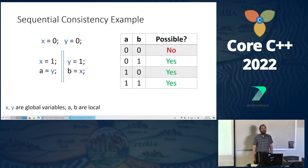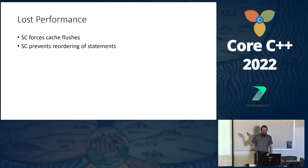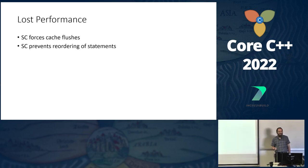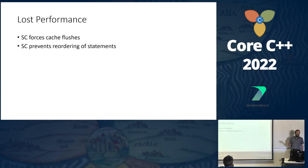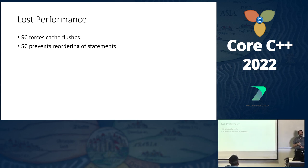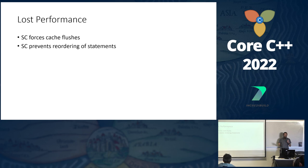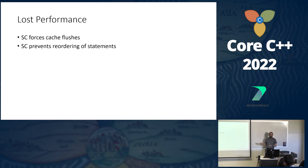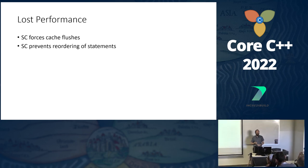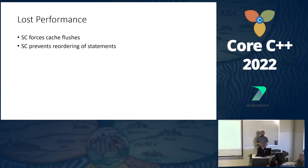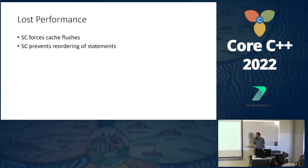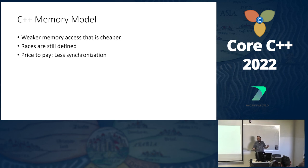What is the problem? We lose a lot of performance. All these sequential consistency accesses force cache flushes — we need to make sure the different threads have the exact same view of everything. They also prevent statement reordering, which could hurt memory access patterns. There's a lot of performance left on the table.